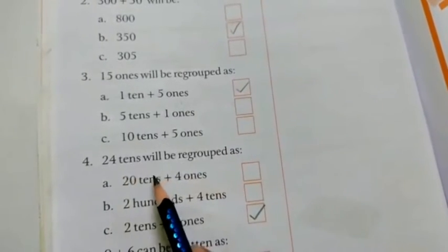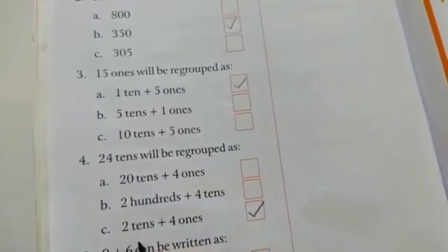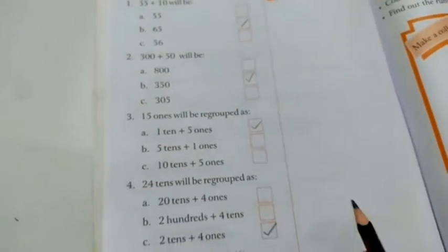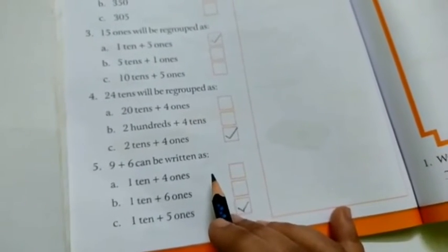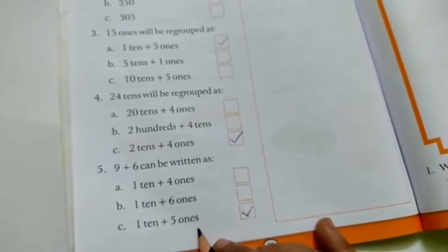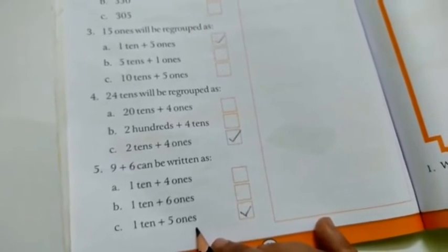Then 24 tens. 24 tens will be regrouped as? 2 tens plus 4 ones. 9 plus 6 can be regrouped as? 1 ten plus 5 ones. So like this way we have done with MCQ questions. You can pause the video and complete.